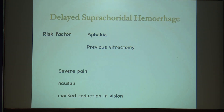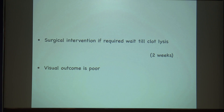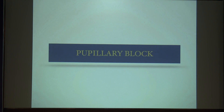Coming to suprachoroidal hemorrhage: the risk factors are aphakia and previous vitrectomy. The patient will complain of severe pain and nausea, and there will be a marked reduction in vision. You will see dark red dome-shaped elevations and in B-scan there will be hyperechoic spaces. For surgical intervention, always wait at least two weeks so that the clot gets lysed. But the visual outcome is poor.